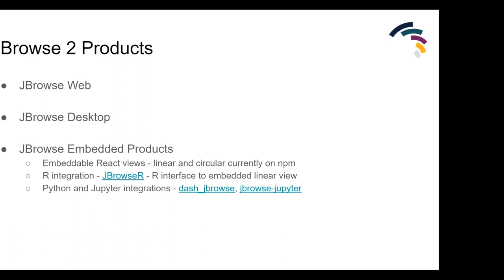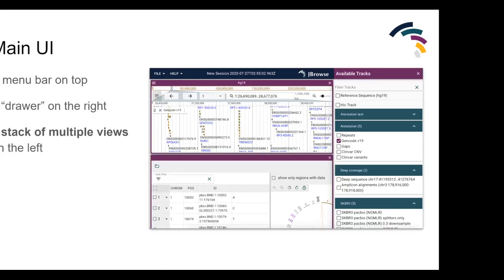There have already been a couple of integrations using the embedded products. For example, there's a great R integration that allows you to use the JBrowse2 linear genome view in an R Shiny app and other R apps, made by Elliot Hirshberg on the team. We also have Python and Jupyter integration, so you can use a JBrowse2 linear genome view - and soon a circular genome view - in your Jupyter notebooks now.